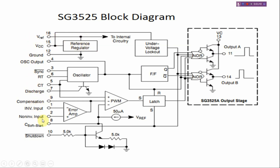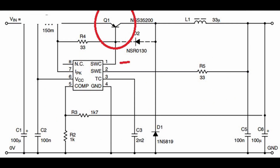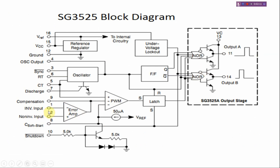We control the IC for the frequency using C-T. The C-T capacitor sets the frequency. Here is the error amplifier. This is pin 2. When the voltage is increased, the pulse will increase. If pin number 1 voltage increases, the output will increase. Then the voltage adjusts to these two pins, and the output pulse will increase.